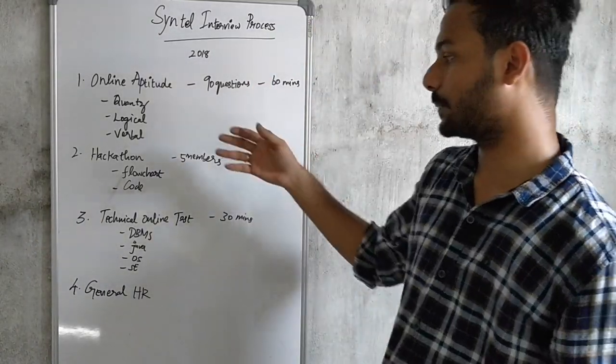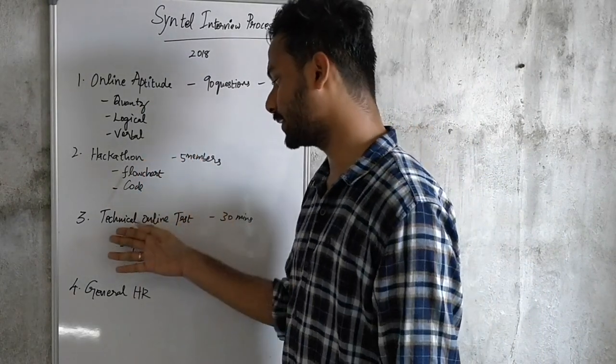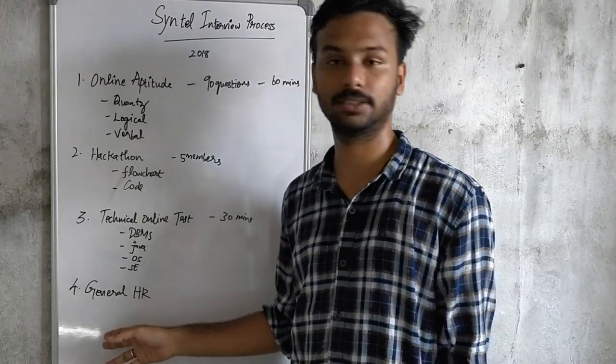In this process, there are four rounds. First is the online aptitude test. Second is the hackathon or coding round. Third is the technical online test. Fourth is the general HR round.